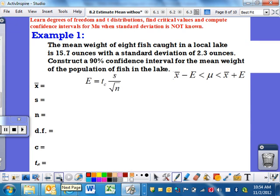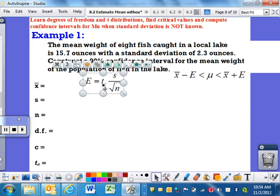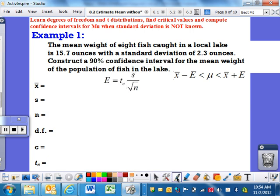I'm going to give you two examples and we're going to work through them. The mean weight of eight fish caught in a local lake is 15.7 ounces with a standard deviation of 2.3 ounces. Construct a 90% confidence interval for the mean weight of the population of fish in this lake. They want you to take, using these eight fish information, we're going to build a confidence interval. Give me an estimate of what the mean is for the entire lake. Well, since I do not know anything about the population except the sample, that's why I'm using a T critical value.